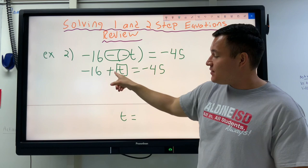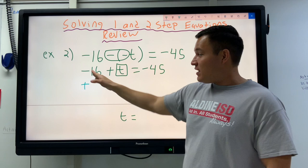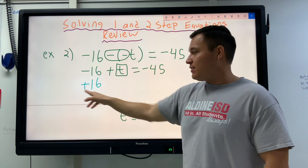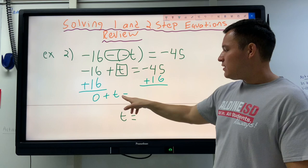So what will be the opposite of subtracting 16? Adding 16. Because we see that this 16 is negative, the only way we get rid of it is by adding a 16 to it. And if we add 16 there, we're going to add 16 here. Negative 16 plus 16 makes 0 plus T. This is also a place where a lot of students make mistakes.